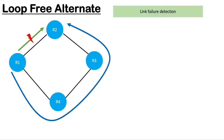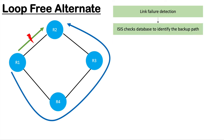First of all, you need to be running some link failure detection mechanism like BFD. If you don't have that, it may take several seconds, even minutes, or sometimes the router would not know there is a problem with the link. In order to find link failure very quickly you need a mechanism like BFD. Once you identify the link has failed, the actual timer starts for the routing protocol to bring the backup path into the routing table and program it to the data plane. I'm using ISIS here, so ISIS checks its database to identify the backup path.